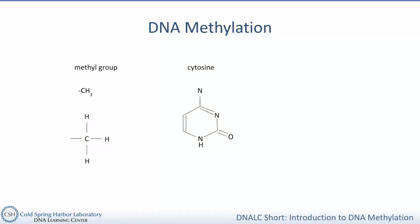This occurs at the five prime position in the cytosine. So if we count the atoms in the ring from here in a counterclockwise direction — one, two, three, four, five — the methyl group gets added on to make 5-methylcytosine, which looks like this.